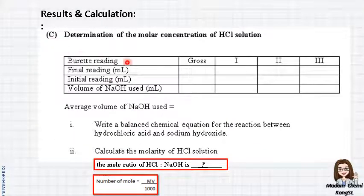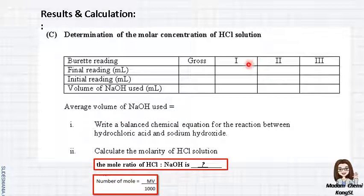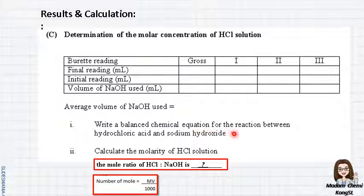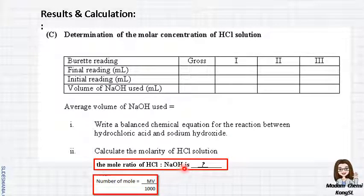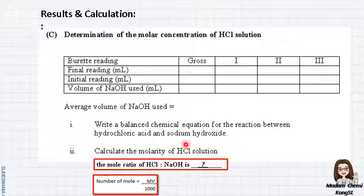Similarly for Part C, jot down all the results for the gross reading, first, second, and third titration readings. Calculate the average volume of sodium hydroxide used — considering only the first, second, and third readings; the gross is just for estimation. Write the balanced equation for the reaction between hydrochloric acid and sodium hydroxide, determine the mole ratio, find the moles of sodium hydroxide, and use that to find the moles of HCl and then the molarity of HCl.